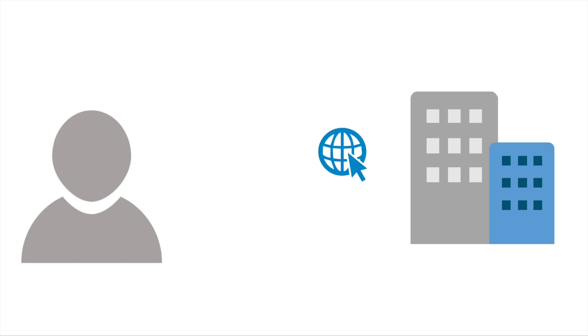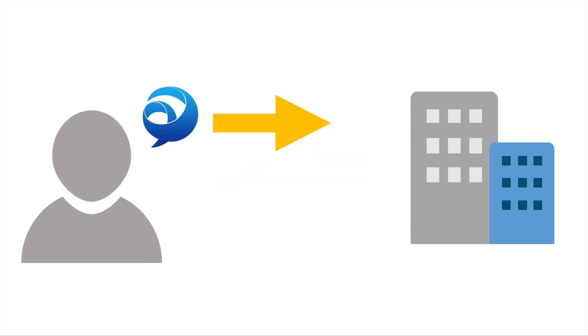A Jabber Guest link will be provided to you by the organization you're going to connect with. This could come via a web link or it could come as a link in an email. Either way, this link will be provided to you. From there you simply click the link, Jabber Guest will be launched, and your connection to the organization will be made. This tutorial will show you what to expect immediately after clicking on this Jabber Guest link.